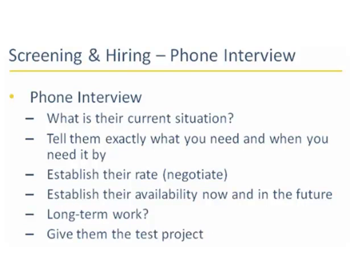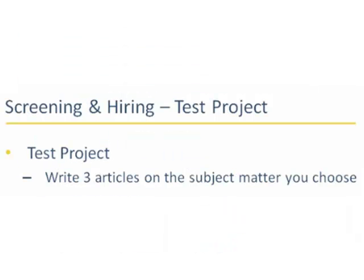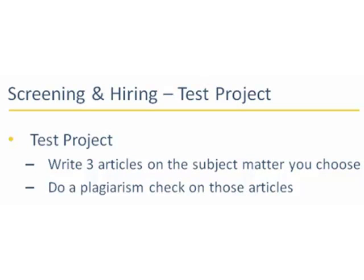You also want to give them a test project. Give them three articles to write — here are three subjects, write articles on these. And be careful: on this interview, don't commit to anything just yet. The test project you want to give them is three articles on the subject matter of your niche, and insist on this. When you get these in, they're going to demonstrate whether or not this person can write. Also, this is the first place to check for plagiarism, because many times people will try to take a shortcut and copy content. You definitely don't want that, so this is the time to weed those out. Don't go any further if any of the material in their test articles is not original.